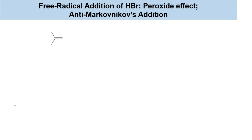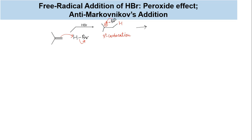We have seen that hydrohalogenation of alkenes occurs via Markovnikov's orientation, so that the positive part of the reagent, which is a proton in the case of HX, adds to the less substituted carbon to form a more stable carbocation intermediate, which is then captured by the negative part, a halide ion in the case of HX, to form the alkyl halide. In the end, H is attached to the less substituted carbon, whereas X is attached to the more substituted carbon.